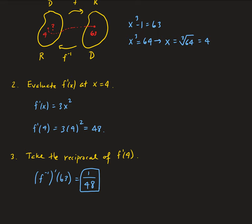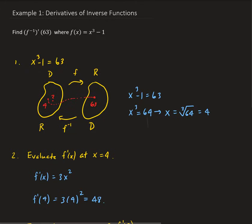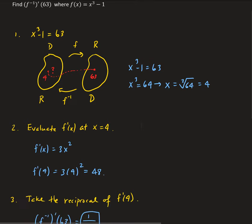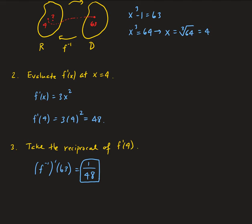So that is the solution. Again, you solve for your corresponding x value in the domain by setting the function equal to the value that they give you. Solving that will give you the value in the domain of f. Then you evaluate the derivative at that point, and then we take the reciprocal of that result.